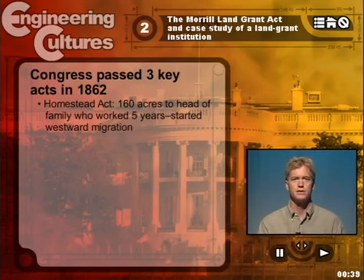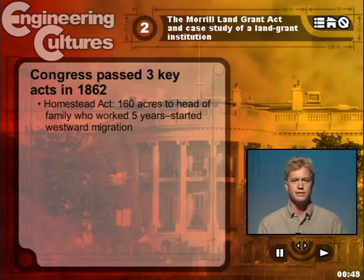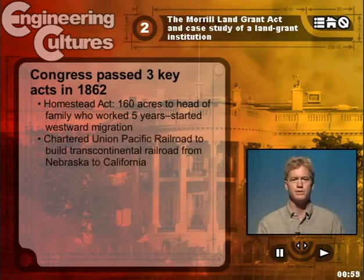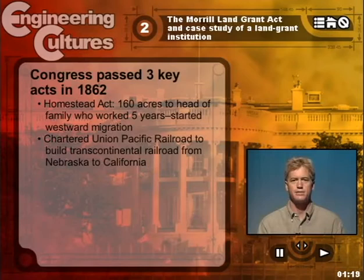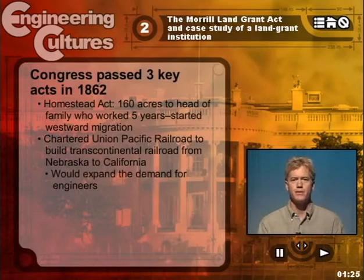The first was passage of the Homestead Act, which offered 160 acres to any head of a family who would work five years in unappropriated lands of the United States, and this initiated substantial westward migration. Congress also chartered the Union Pacific Railroad to build a transcontinental railroad from Nebraska to California. Up until that time, engineers were largely self-taught, and those self-taught engineers who had surveyed lands, built roads, canals, and bridges were no longer adequate to the task of a project of this scale and magnitude. It initiated a new demand for engineers with greater mastery of scientific resources.